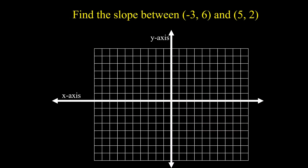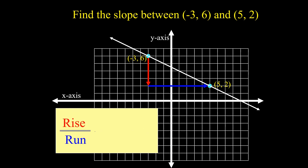Find the slope between (-3, 6) and (5, 2) using our graph. Let us locate the points (-3, 6) and (5, 2) and connect them to make a line. From point (-3, 6), we go downward four steps and to the right eight steps. Therefore, rise over run is equal to negative 4 over 8, or negative 1 half. The slope between (-3, 6) and (5, 2) is negative 1 half using the graph.